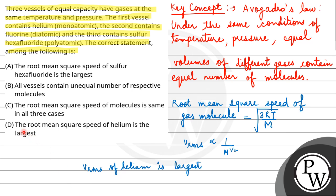That means option D is correct. Option A, root mean square speed of sulfur hexafluoride is largest - no, this is wrong because largest is for helium. Option C, root mean square speed of molecules is same in all three cases - this is also wrong because root mean square speed depends on mass. So our final answer is option D. I hope you understood it well. Best of luck.